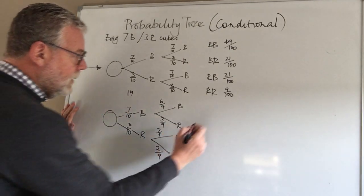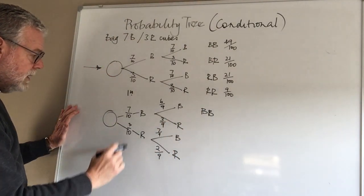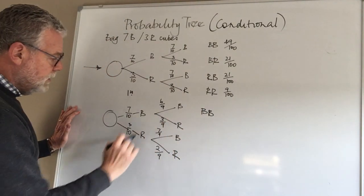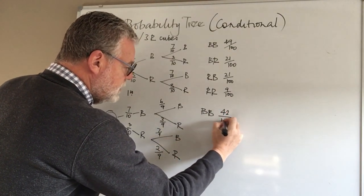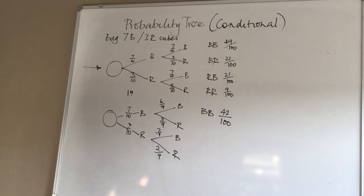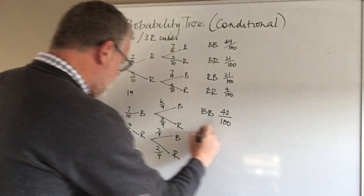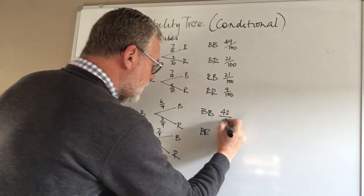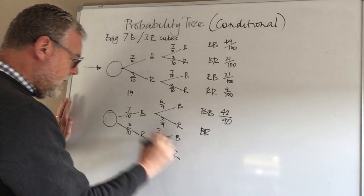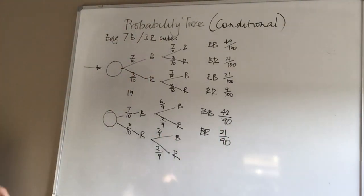And then we work the outcomes out in exactly the same way. Let me just do a couple to demonstrate the difference. So this time, to get a blue and blue, it would actually be 42 out of 100... Getting a blue and red, we would have, sorry, 42 out of 90. Getting a blue and red would be 21 out of 90 and so on.